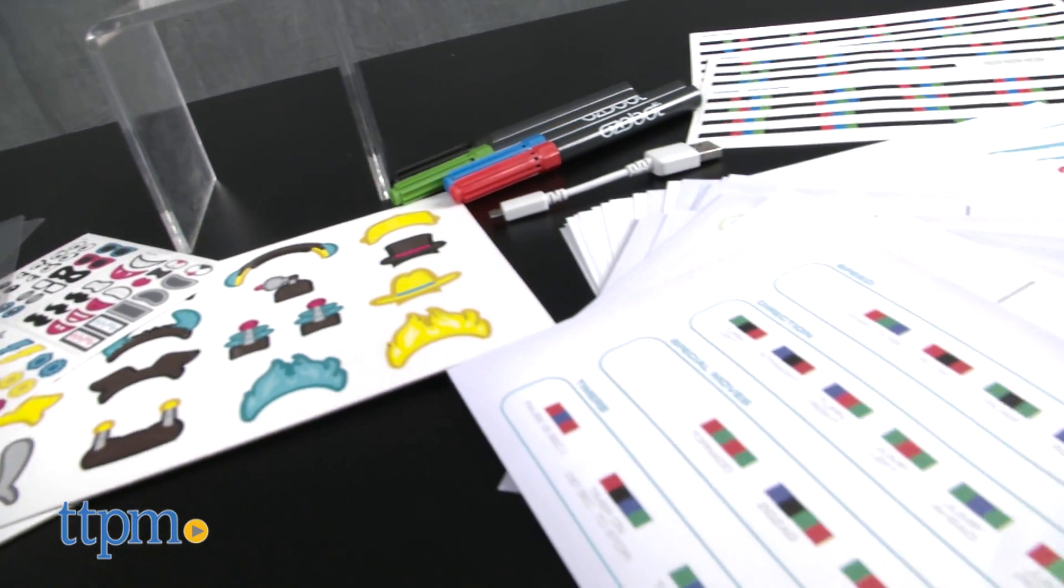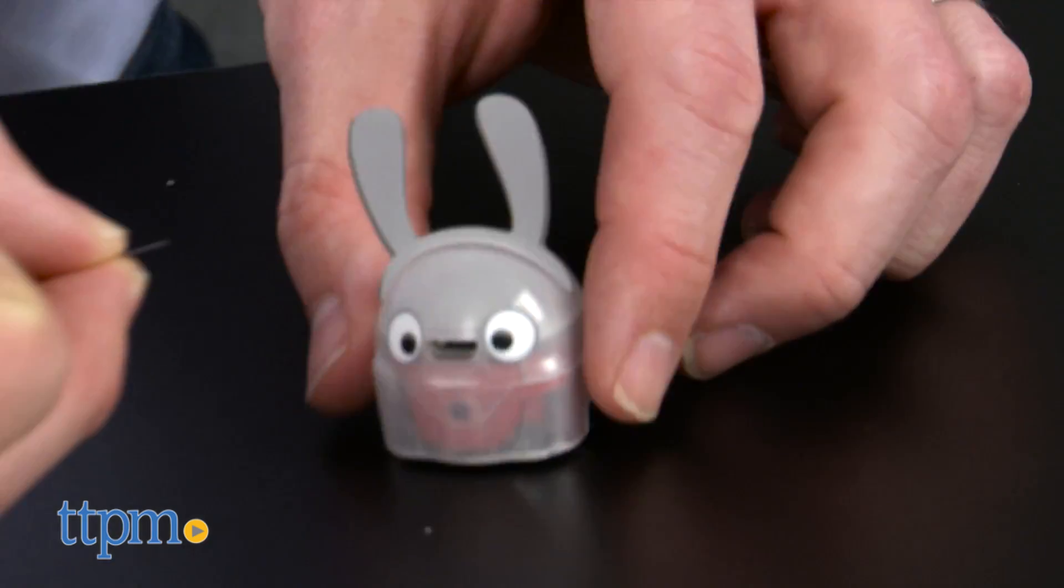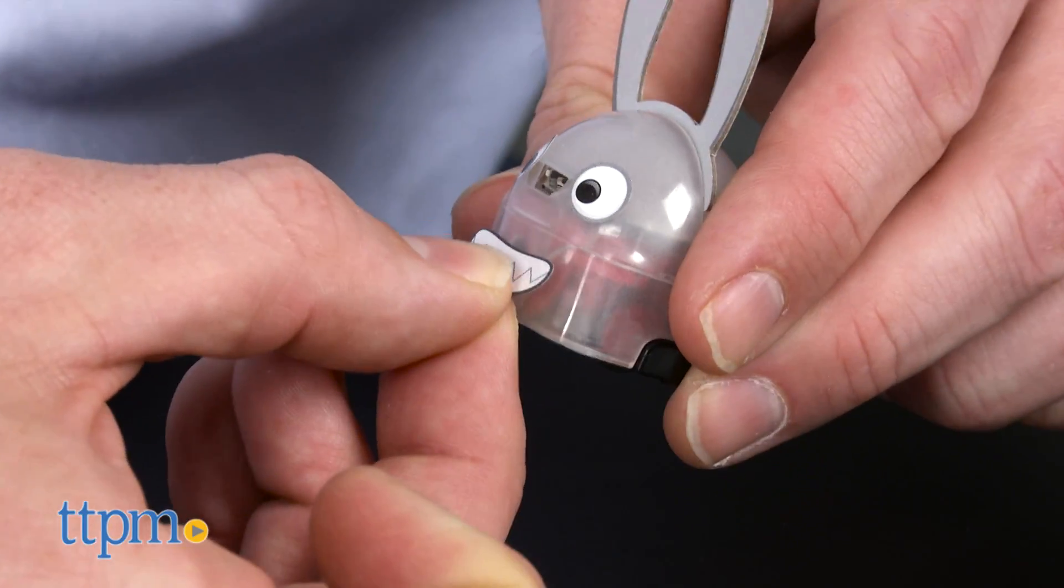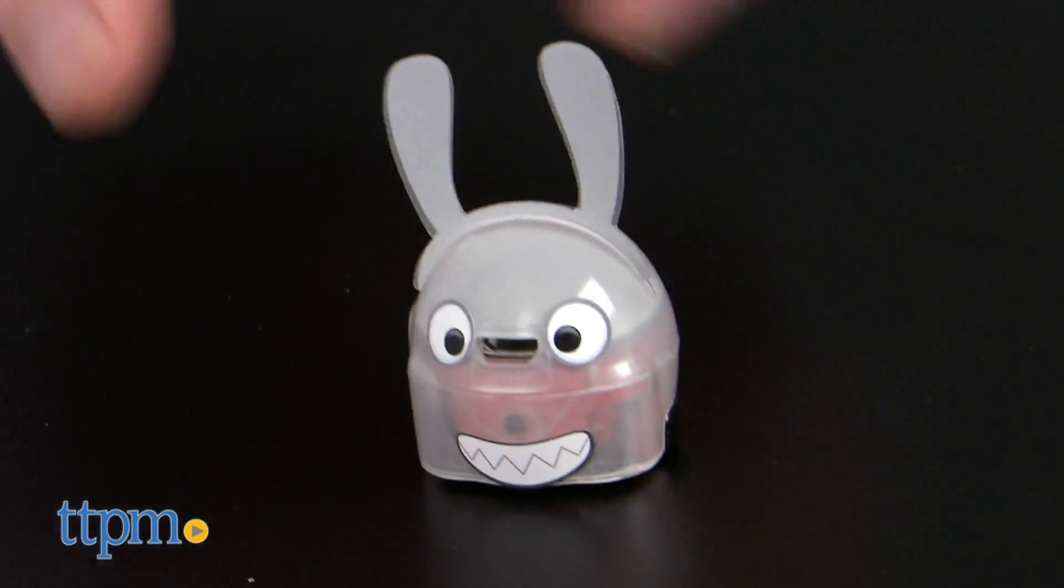Like any good learning toy, things get started slowly. After calibrating your Ozobot, use the included stickers and helmets to decorate and personalize it. Then progress through the 25 included cards to learn how Ozobot responds to color.